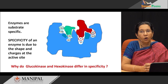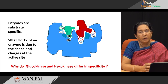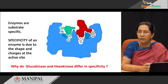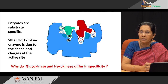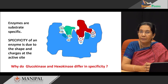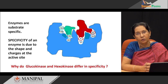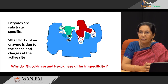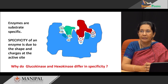The specificity of the enzyme depends upon the shape of the active sites. Think about something — if enzymes were so specific, why is it that two enzymes of the glycolytic pathway, glucokinase and hexokinase, differ in specificity? The answer to that will come a bit later.